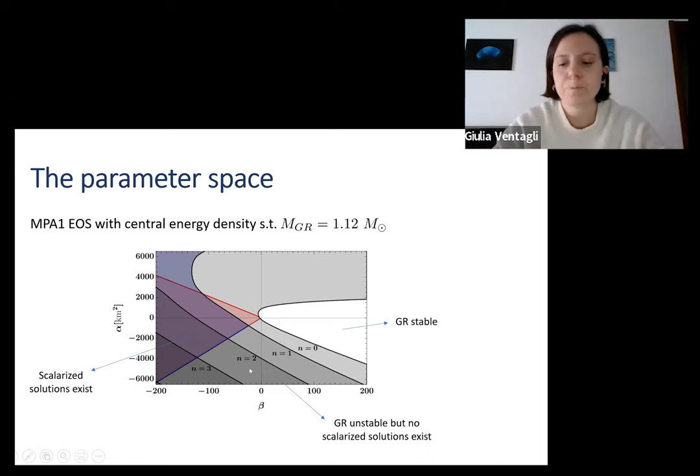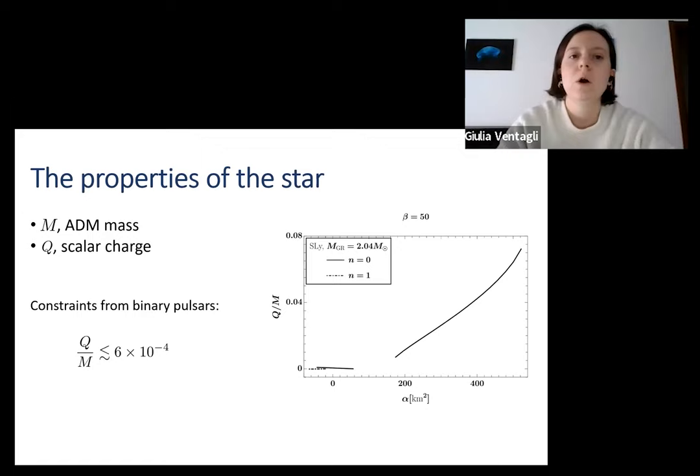The second part of our paper focused on the study of the properties of the star, and in particular on the ADM mass and the scalar charge. Here I'm simply showing one plot to give you an idea of what we did. I'm showing the ratio between the two because thanks to observations from binary pulsars, we know we can constrain this. In this formalism, this is a dimensionless quantity, so we know that we can constrain Q over M. I'm not going into the details why this has to do with sensitivities. I have a slide if you want elucidation on this. Here I'm showing a particularly straightforward case for this analysis. This is a SLy equation of state for a higher central energy density and for a positive beta. We are varying the coupling parameter of the Gauss-Bonnet.